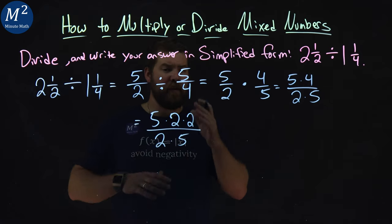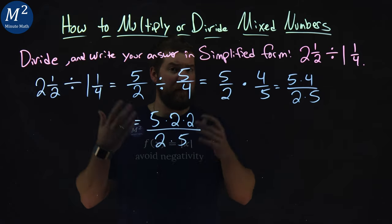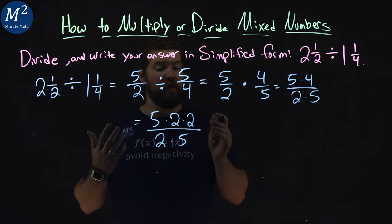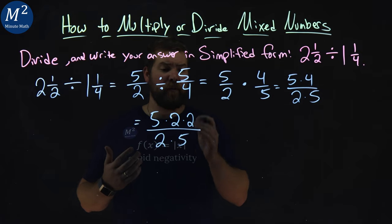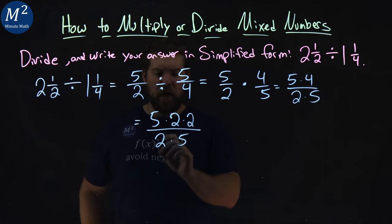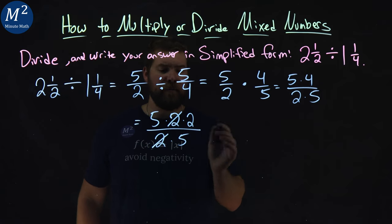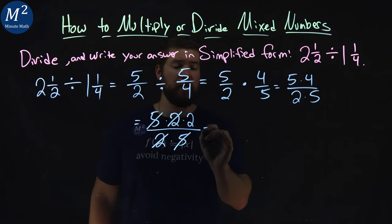The reason why I want to do this is that we can easily cancel things out. We have to simplify this. Easier to simplify if it's in factored form, the numerator and the denominator. Two's cancel, right there. Five's cancel. That's pretty easy.